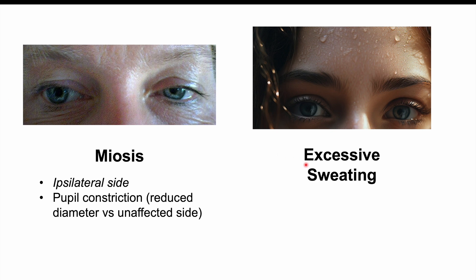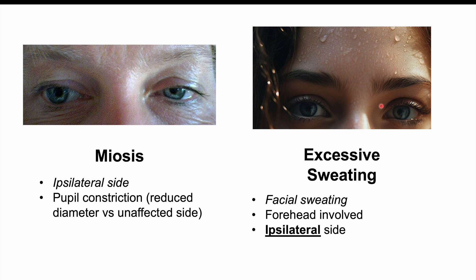There can also be issues with excessive sweating — facial sweating, more specifically involving the forehead. This too occurs on the ipsilateral side. So although an image may show bilateral sweating, with a cluster headache it is unilateral — the pain around or behind the eye, with excessive sweating on the forehead on that affected side only. The excessive sweating can occur in roughly a quarter of patients.